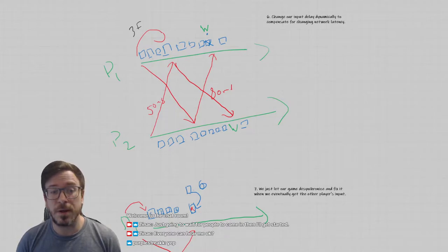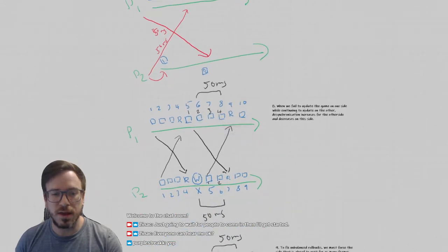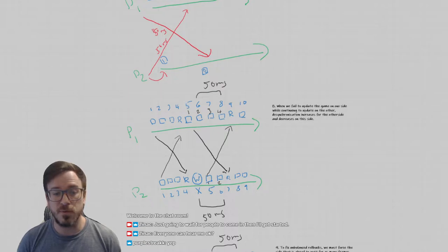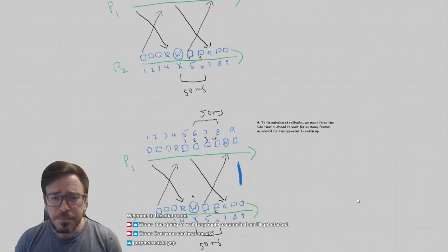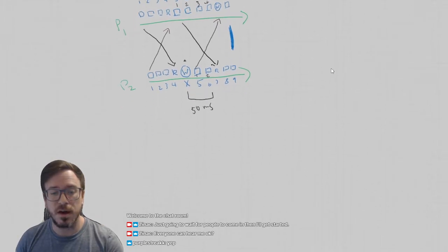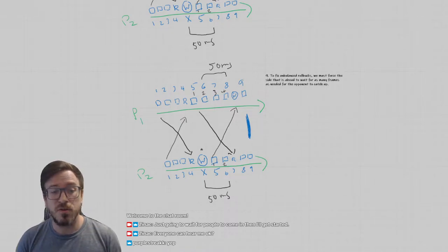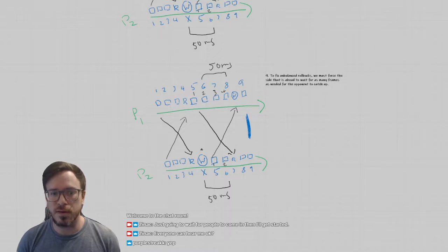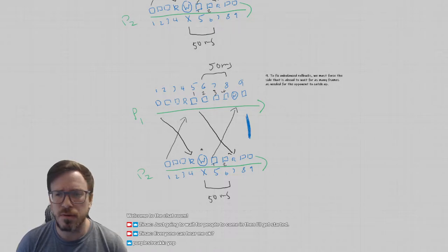You need to adjust that input delay dynamically because networking conditions can change. Network latency is dynamic — it changes over time, so you need to compensate for that. I covered rollbacks and the problems with rollbacks and how latency affects rollbacks. If there's more latency online, the amount of rollbacks can increase. I talked about the issue of dropping frames and unbalanced or one-sided rollbacks, and how to deal with that from a high-level point of view. The idea is that if one side drops a frame, you need to detect that and slow your client's side down so that your opponent's computer can catch up.